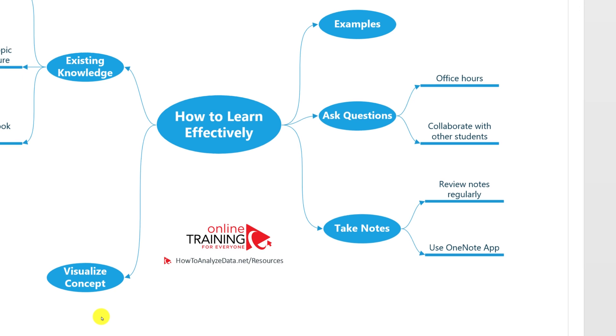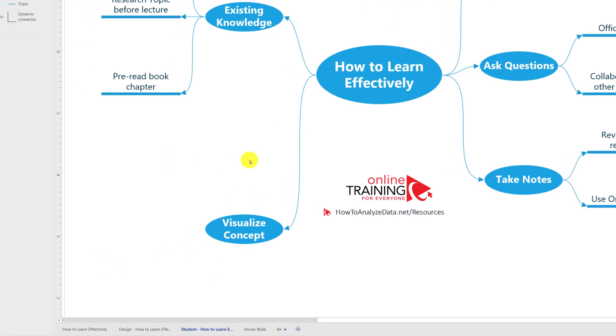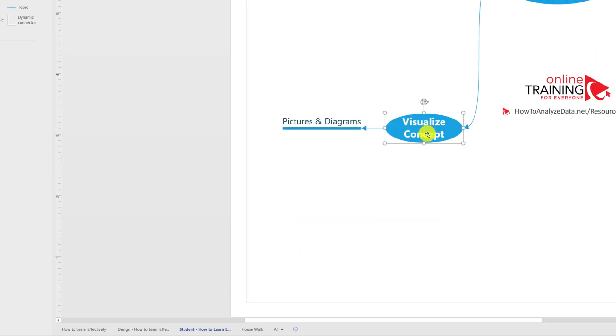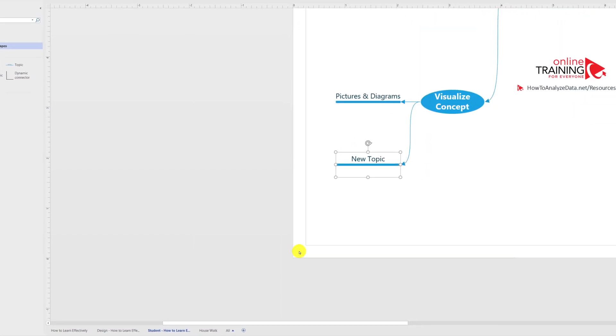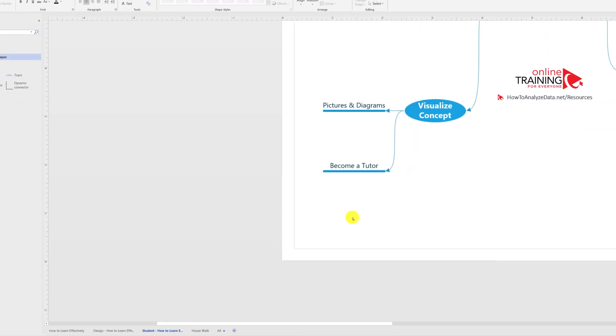Another way to learn effectively is to visualize the concepts that you're studying. You can do it better by adding pictures and diagrams right into your note. Another idea might be for you to become a tutor and explain the concept and topic to somebody else and draw the pictures and diagrams for these people to help them understand what's going on.